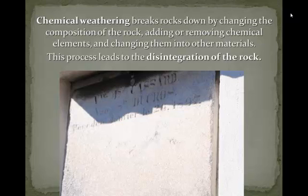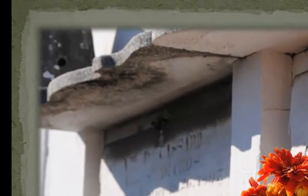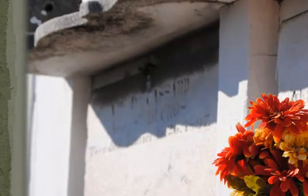Notice the grave marker and how the bottom portion of the grave marker is indecipherable — it's smooth. Only the upper portion is still visible. If we took a look at a different view of this, you can see that there's a ledge overhanging the tomb marker that has protected the upper portion of the marker from the elements.